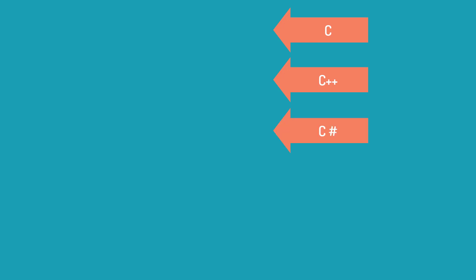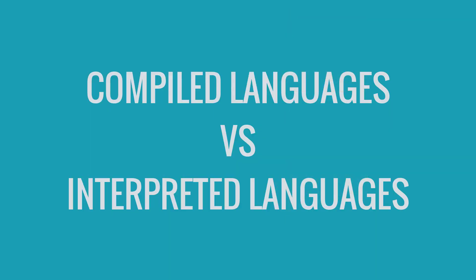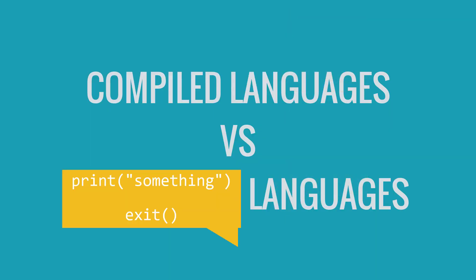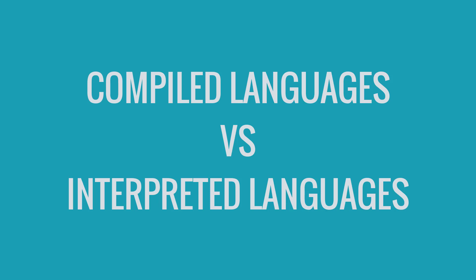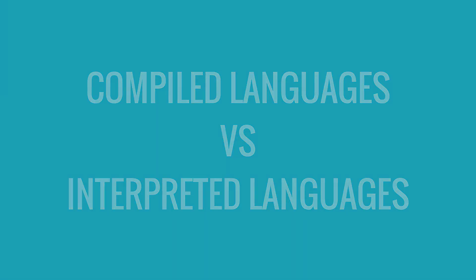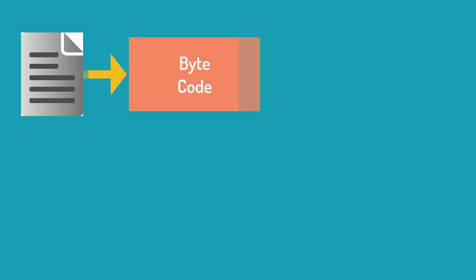All these languages — C, C++, C#, Java, Python — are all high-level languages. Computers don't understand commands like print or exit functions. They only understand binary code, which are ones and zeros. To convert our Java or Python code into binary code, it uses intermediate bytecode.